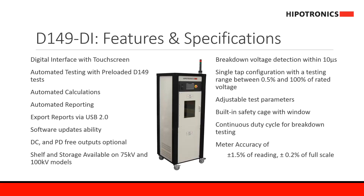The 75kV and 100kV versions have a shelf available to store accessories used during the test. This system's breakdown voltage detection is within 10 microseconds, and one of the main new features of the D149 DI series is a single-tap configuration that allows the operator to test from 0.5% to 100% of the rated voltage.